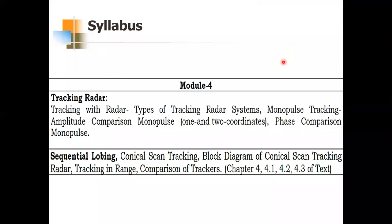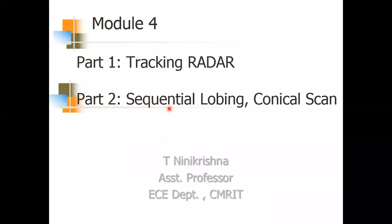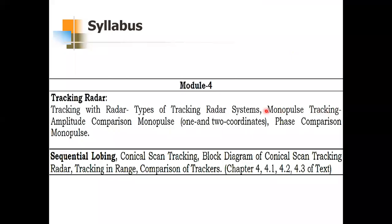Today we are going to start Module 4: Tracking Radar. The syllabus of Module 4 has two parts. Part 1 is tracking radar, and Part 2 is sequential lobbing and conical scan. In Part 1, we have what is tracking radar, types of tracking radar systems, and monopulse tracking. Under monopulse tracking, there are two subcategories: amplitude comparison and phase comparison.